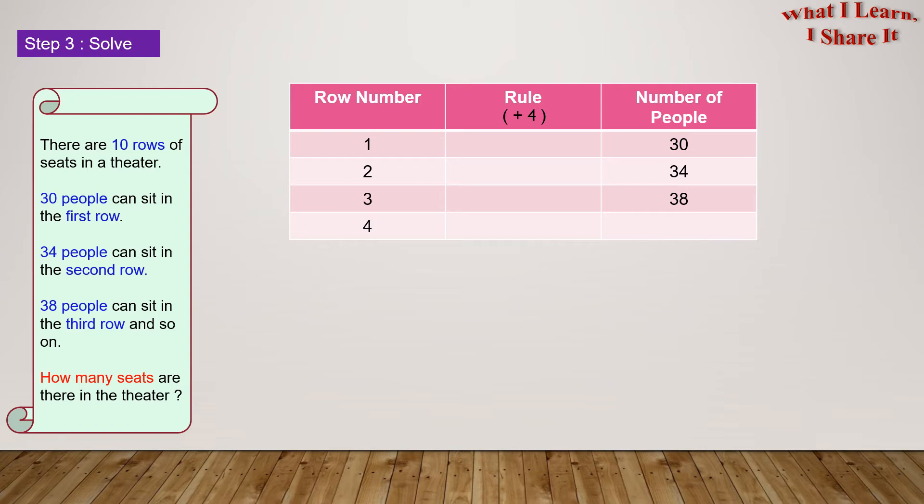Let's find out the number of people for row number 4. If we apply the rule, it will become 38 plus 4, which is 42. Again, for row 5, it will be 42 plus 4, which is 46. And for row number 6, it will be 46 plus 4, which is 50.